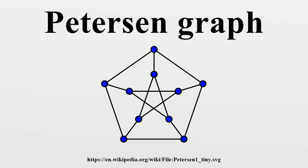As a Kneser graph of the form KG(5,2), it is an example of an odd graph. Geometrically, the Petersen graph is the graph formed by the vertices and edges of the hemi-dodecahedron, that is, a dodecahedron with opposite points, lines and faces identified together.